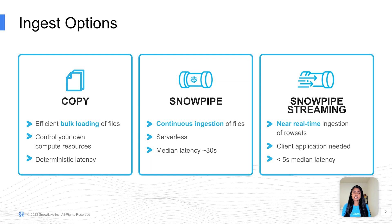Snowpipe is Snowflake's continuous data loading service for files. Snowpipe enables loading data from a file as soon as it is available in a stage. This means you can load data from files in micro-batches, making it available to users within minutes, rather than manually executing copy statements on a schedule to load larger batches.